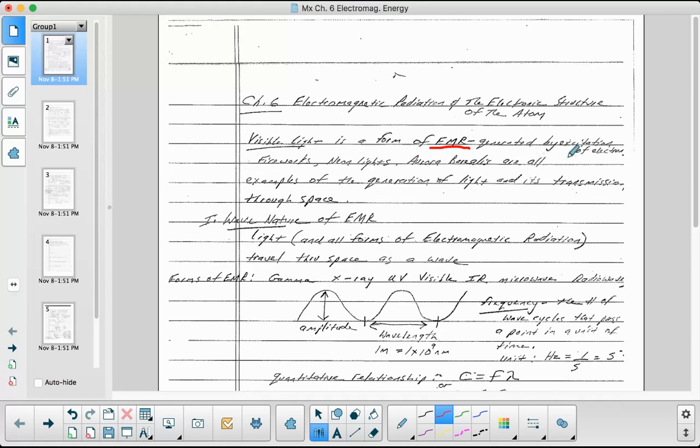Visible light is a form of electromagnetic radiation, and it's generated by the excitation of electrons. You experience this in fireworks, neon lights, the aurora borealis. These are all examples of the generation of light and its transmission through space.